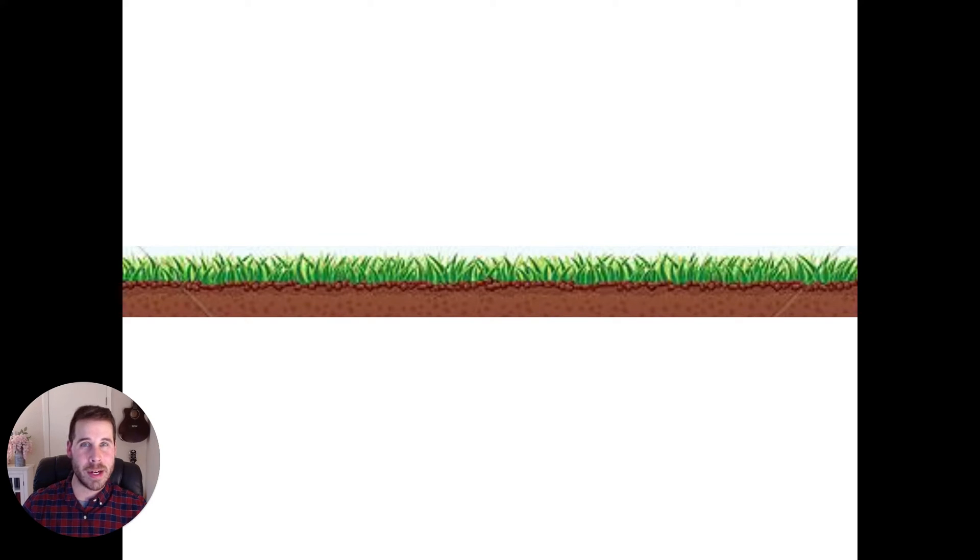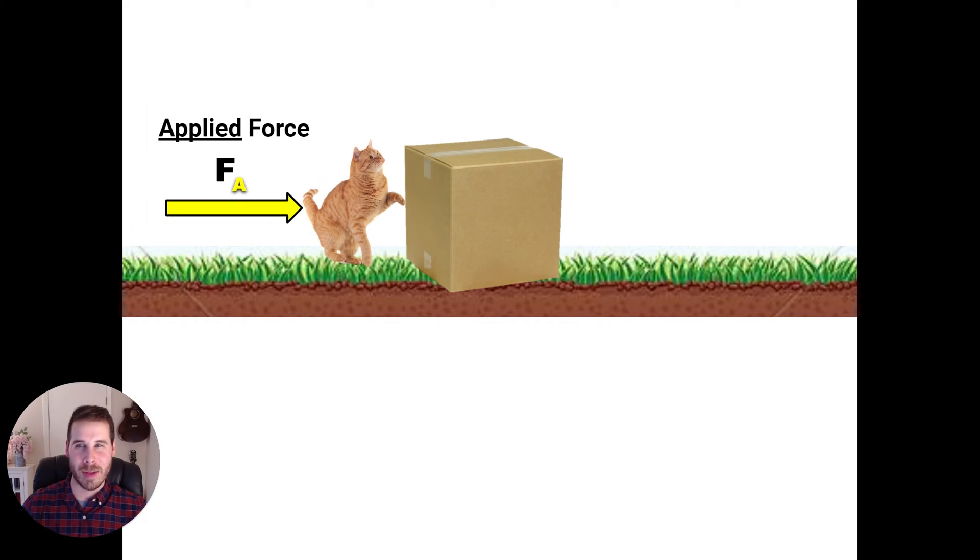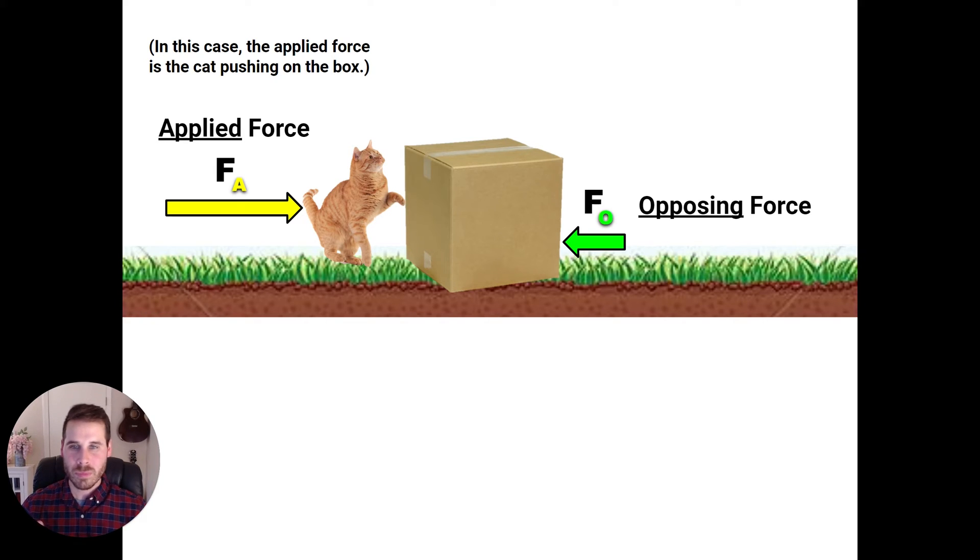Let's imagine that we're looking at a grassy meadow and someone puts a cardboard box on the grass. Then imagine that a mischievous cat comes up and pushes on the box. We would call this an applied force because the cat is applying a force to the box. So what is the box going to do as a result? Well, the box is going to move in the direction of the force unless there's some kind of opposing force that will try to fight that motion.